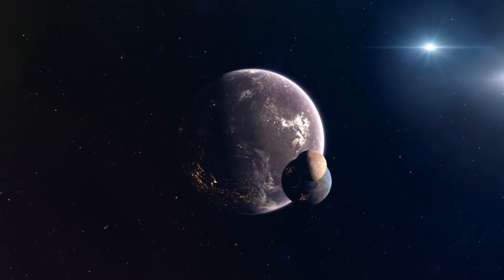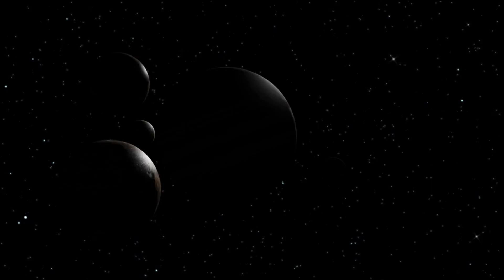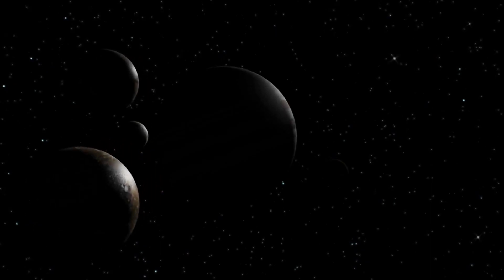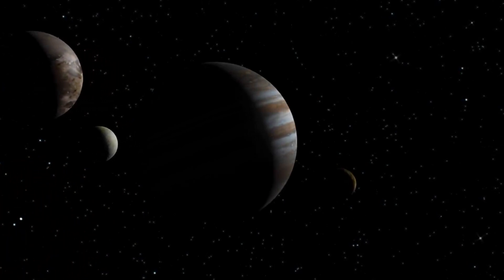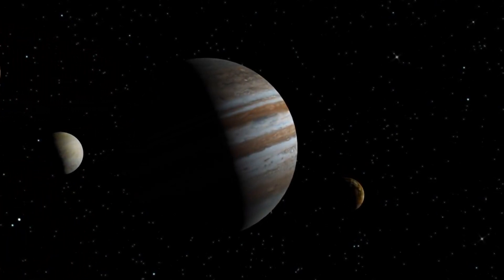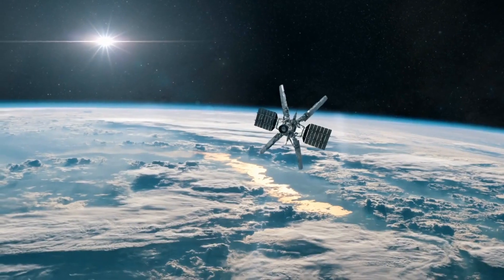There are 200-plus moons in our solar system. Most of the planets, except Mercury and Venus, have their own natural satellites. Moons don't just orbit planets though.